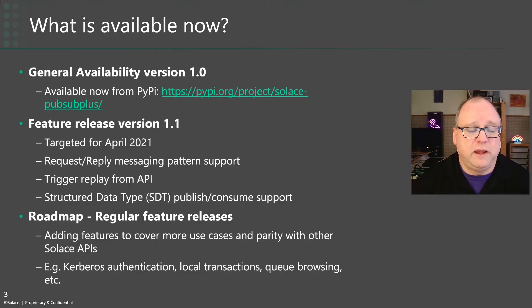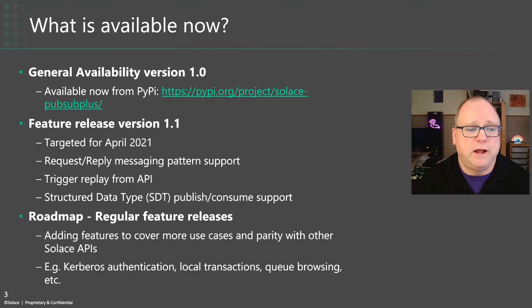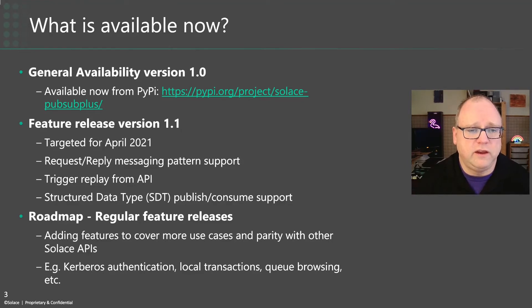There's a feature release planned very soon — in the next couple of weeks — called 1.1. It will include helpers for request-reply messaging, the ability to trigger message replay from the API itself, and support for reading and writing messages using structured data types. This is really about interoperability with the other Solace APIs, which publish messages using SDTs, so the Python API needs to be able to receive and publish them for other applications.